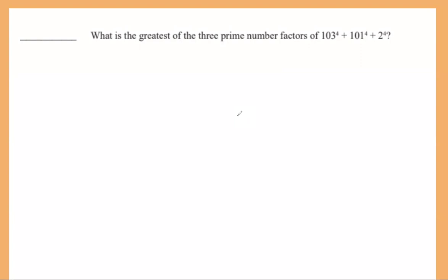This is number 30, the last question, meant to be the most challenging problem of the test. We need the largest of the three prime factors of this expression — this sum of fourth powers. If you have time and no other ideas, you can try computing the fourth powers of those numbers, add them together, and find the prime factors, which might take a while. But as we did in the first problem, we don't want to do that task.